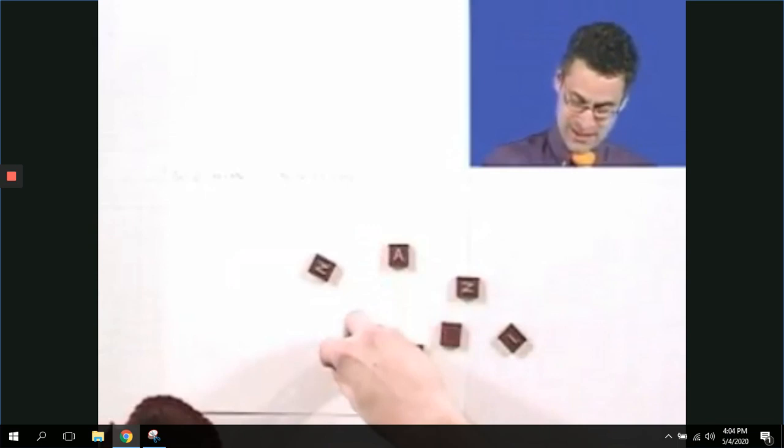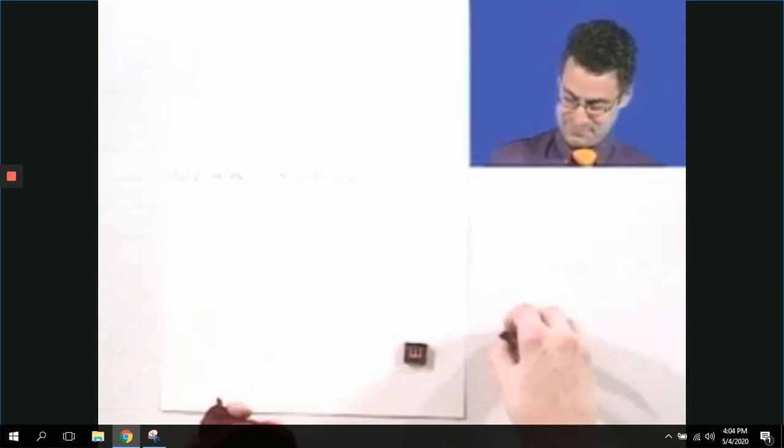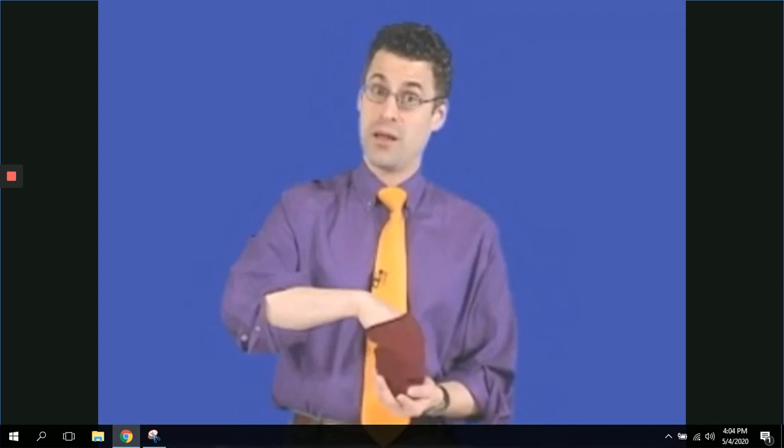So the question is, out of the hundred tiles that are in here, we know that four of them are L's. So what's the probability, the theoretical probability, of reaching in and grabbing an L? Well, we can think about this as looking at the total number and putting that in the denominator of equally likely possibilities, which are all equally likely because they're mixed up. I can pick up any one of them at random.